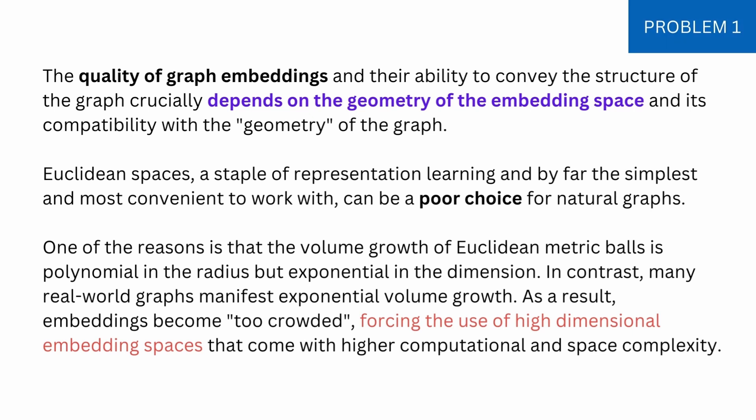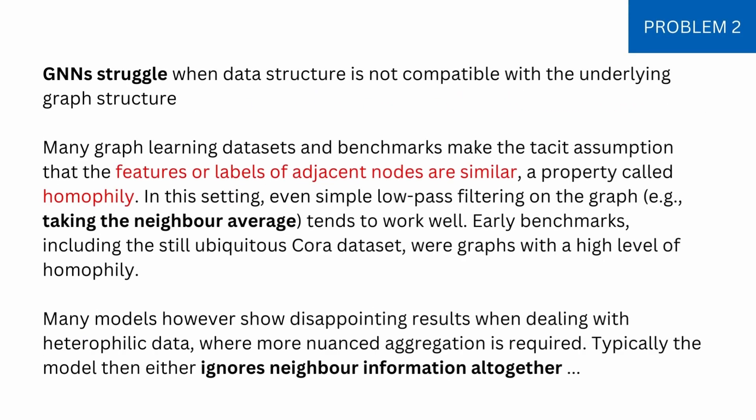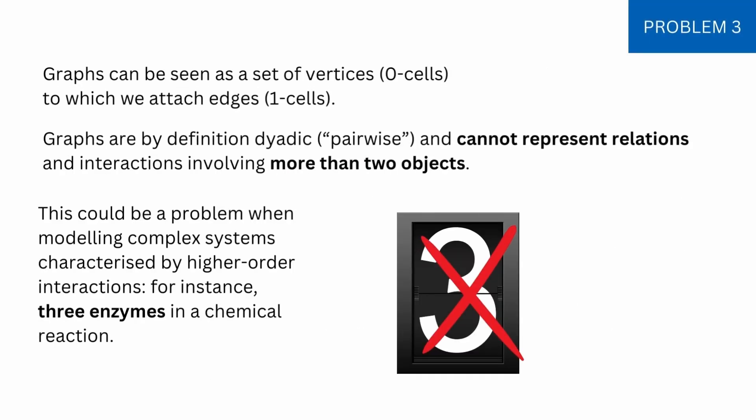Problem two: GNNs struggle when the data structure is not compatible with the underlying graph structure. In many graph training datasets, like the Cora dataset, there is a tacit assumption that the features or labels of adjacent nodes are similar. This works well on simple training sets, but in the real world you get disappointing results when dealing with heterophilic data, which requires more nuanced aggregation. The model can even ignore neighborhood information altogether if there isn't sufficient similarity in the features or labels of adjacent nodes.